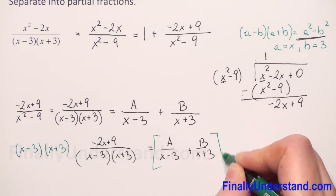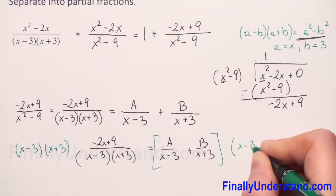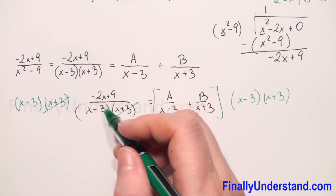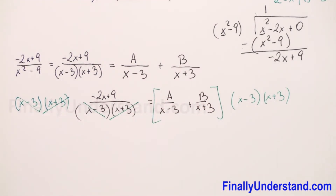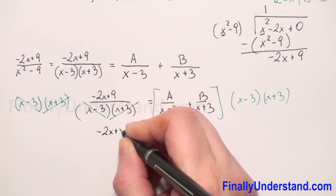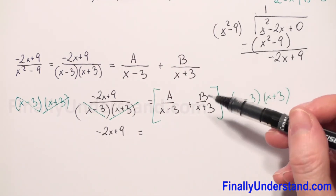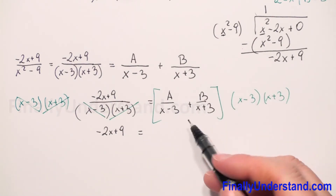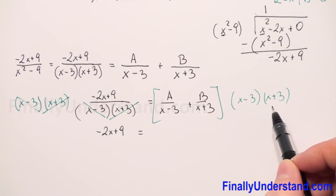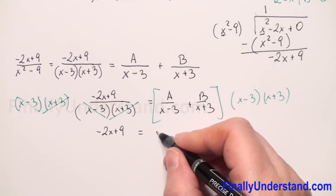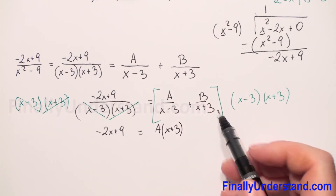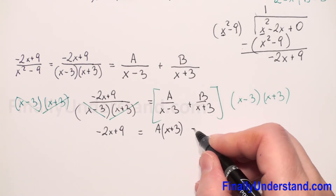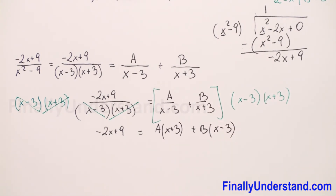We multiply both sides by x minus 3 times x plus 3. On the left side we can reduce, leaving only negative 2x plus 9. On the right side, multiplying the first fraction by x minus 3 and x plus 3, the x minus 3 cancels, leaving A times x plus 3. Multiplying the second fraction, x plus 3 cancels, leaving B times x minus 3.